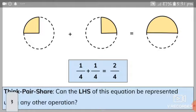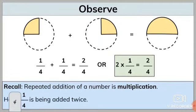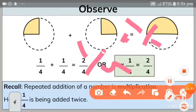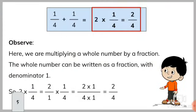So one part plus one part — one by four plus one by four — is equal to two by four. So on the circle, each part has the value one by four. The fraction one by four plus one by four gives us two by four. This means two into one by four equals two divided by four.